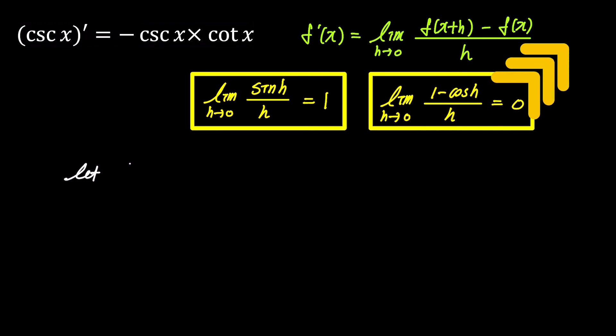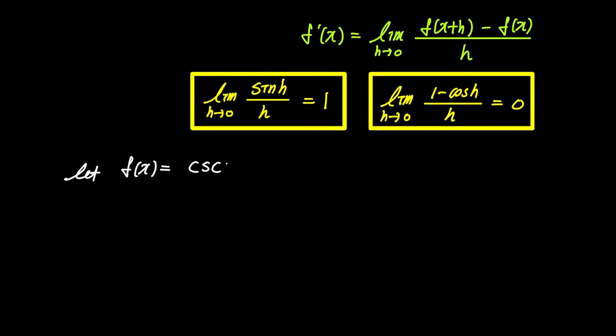Now let's denote f of x as cosecant x for our proof. Then f of x plus h becomes cosecant x plus h. Substituting this into the green equation at the top of the screen, f prime of x becomes the limit as h approaches 0 of cosecant x plus h minus cosecant x over h.